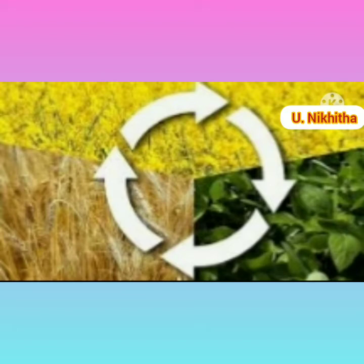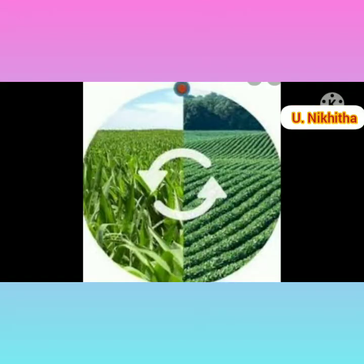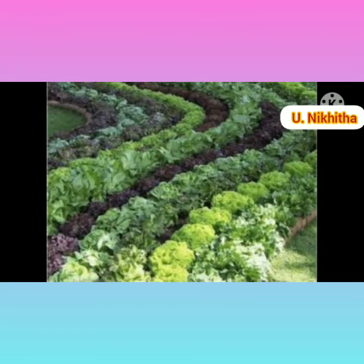Crop rotation is a practice of growing a series of dissimilar or different types of crops in the same area in sequential seasons. It is done so that the soil of farms is not used for only one set of nutrients, helping maintain soil fertility and crop yield.